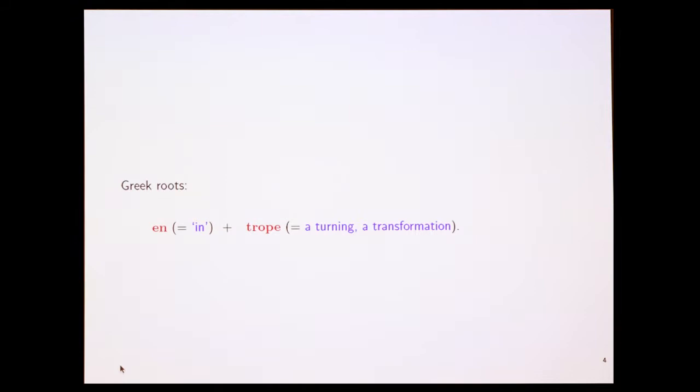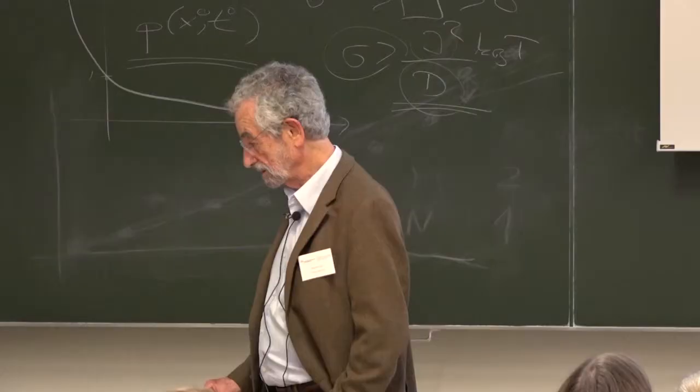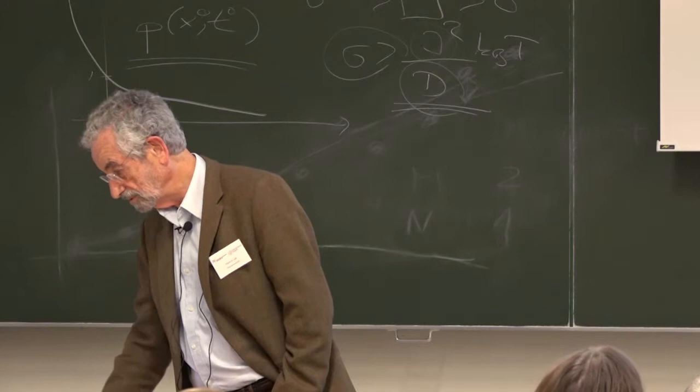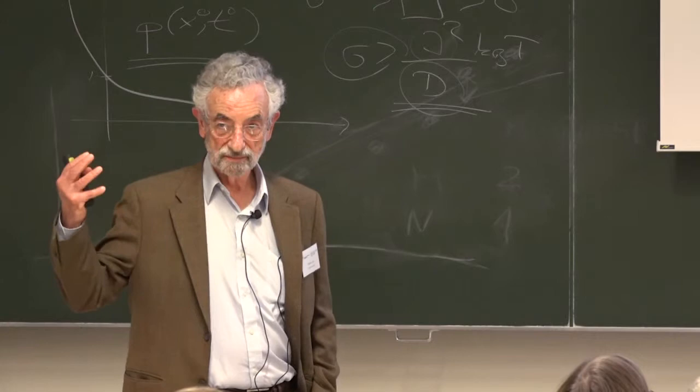Anyway, here's what Clausius cooked up for those who haven't seen it before. The Greek roots of entropy, I hope I have this right: en, which comes in, and trope, which is a turning or transformation. So that's what entropy does according to Clausius. It tells us about transformation. It doesn't tell us about chaos.